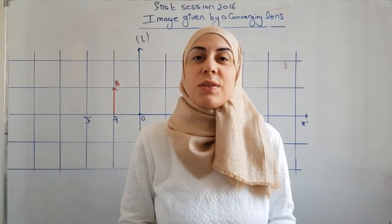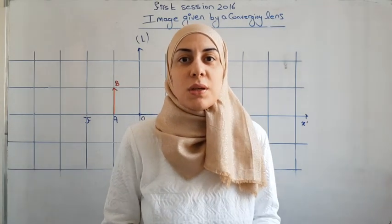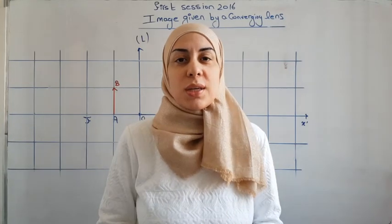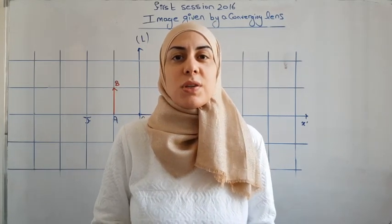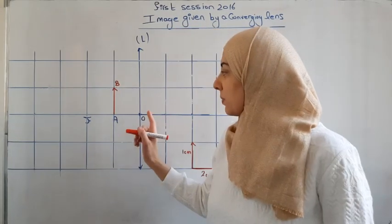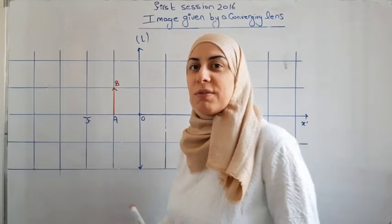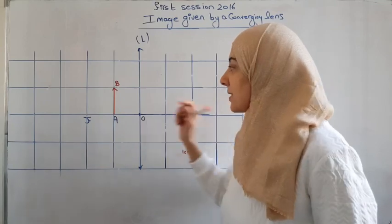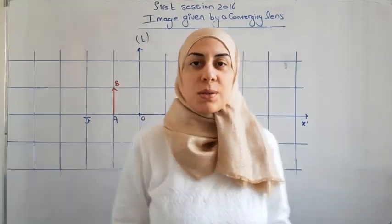Hello and welcome to my channel. In this video we will solve the first exercise of the first session 2016 concerning the image given by a converging lens. The aim of this exercise is to verify that the converging lens cannot act as a magnifier unless we place the object between the optical center and the object focus F. We have the converging lens, its optical axis, the object AB, and the object focus F.